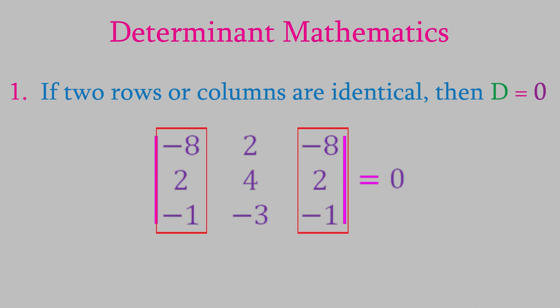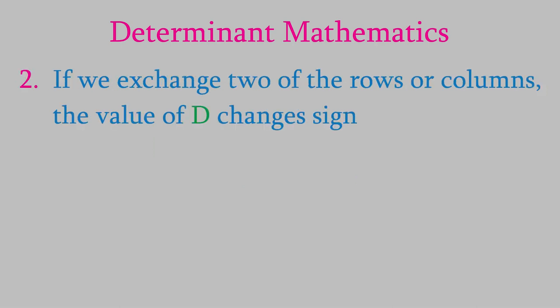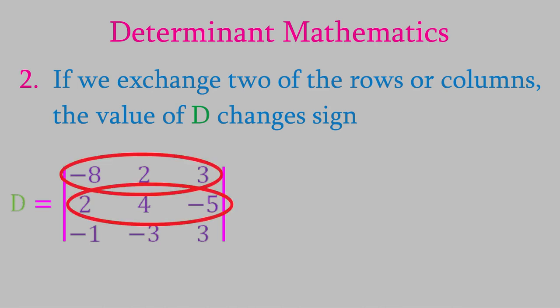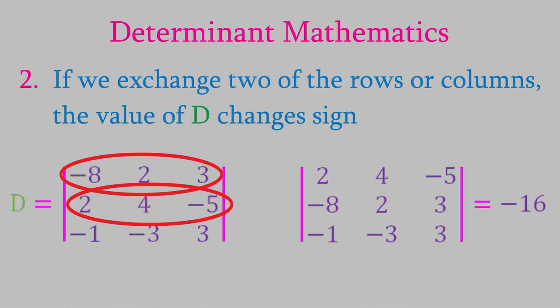The second rule is that if we switch any two rows or columns, the value of the determinant changes sign. For example, here's the determinant we saw earlier, which has a value of 16. If we switch the top two rows, we know that the value of the determinant will now be negative 16.